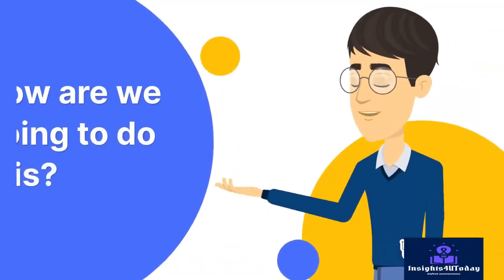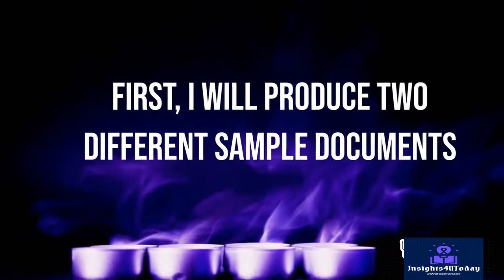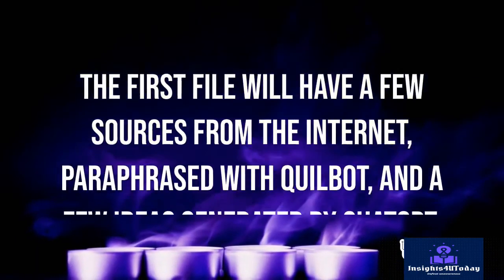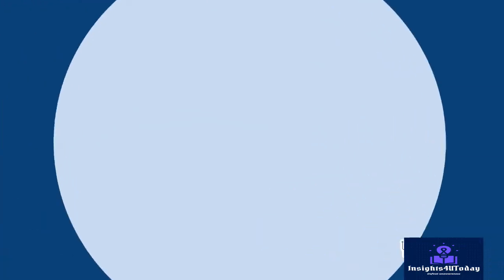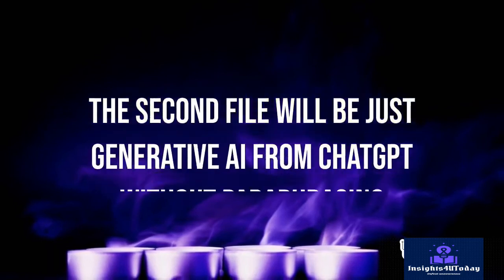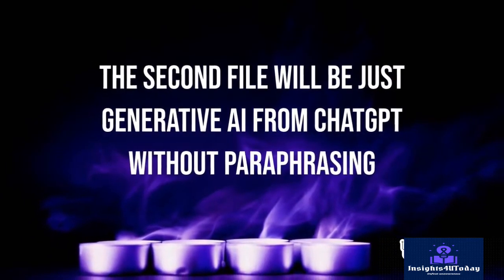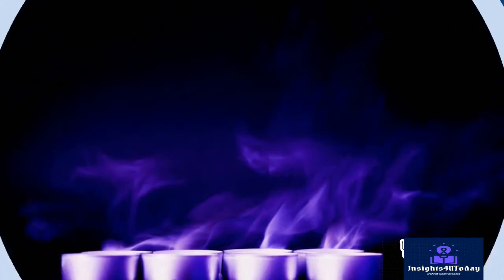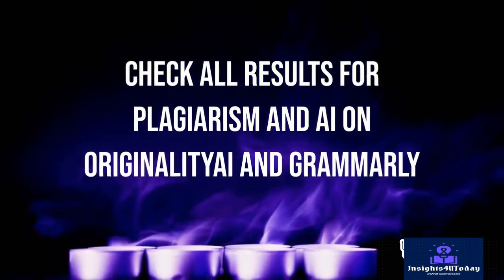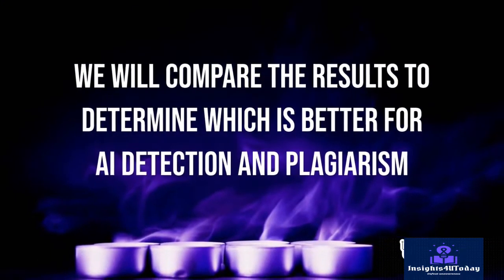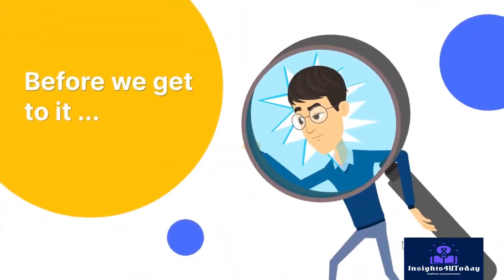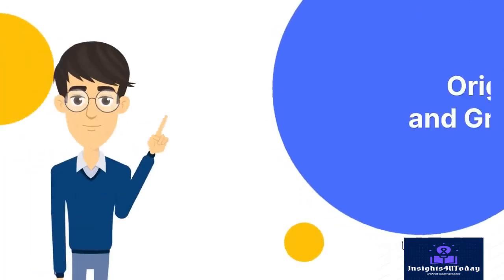How are we going to do this? I have produced two different sample documents. The first file will have a few sources from the internet paraphrased with Quillbot and a few ideas generated by ChatGPT. The second file will be just generative AI from ChatGPT without paraphrasing. These files will be used to check plagiarism and AI on Originality AI and Grammarly. After that, we will compare the results to determine which is better for AI detection and plagiarism. But first, let us understand certain salient features of Originality AI and Grammarly.